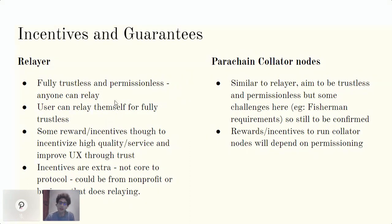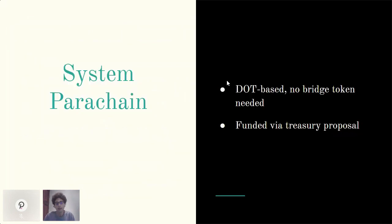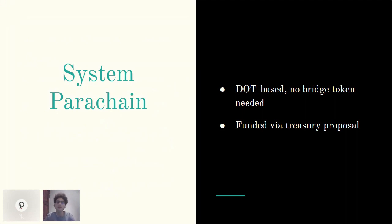We are going to be implementing the bridge as a parachain on Polkadot, which means we need parachain collator nodes. Our parachain is going to be different from other parachains in that it's going to be DOT-based — it won't have its own token. It may be permissionless, with some details still to be defined. Essentially, this is going to run as a system parachain. There's the typical Polkadot parachain auction system, but we're hoping to make a proposal to the Polkadot community for our bridge to be run as a system parachain — considered a core part of the Polkadot infrastructure. We believe bridging to Ethereum is a key part of the Polkadot ecosystem. Ideally, it will be funded by treasury proposals that get the parachain up and running with a sustainable funding model.